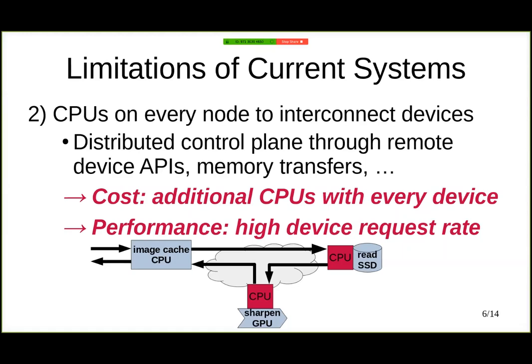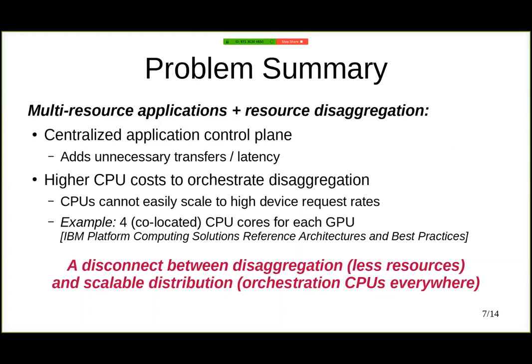To summarize these two problems: when we have multi-resource applications and resource disaggregation together, we see problems with centralized application control planes which add unnecessary data transfers and service latency. We also see higher CPU costs by deploying multiple CPUs to orchestrate these disaggregated resources, partly because CPUs cannot easily scale to high device request rates. For example, an IBM best practices manual recommends co-locating four CPU cores on the same node for each GPU to manage on that node. There is a clear disconnect between disaggregation — where we want fewer, more efficiently-driven resources — and scalable distribution, where we need to add additional CPUs everywhere to orchestrate this communication.